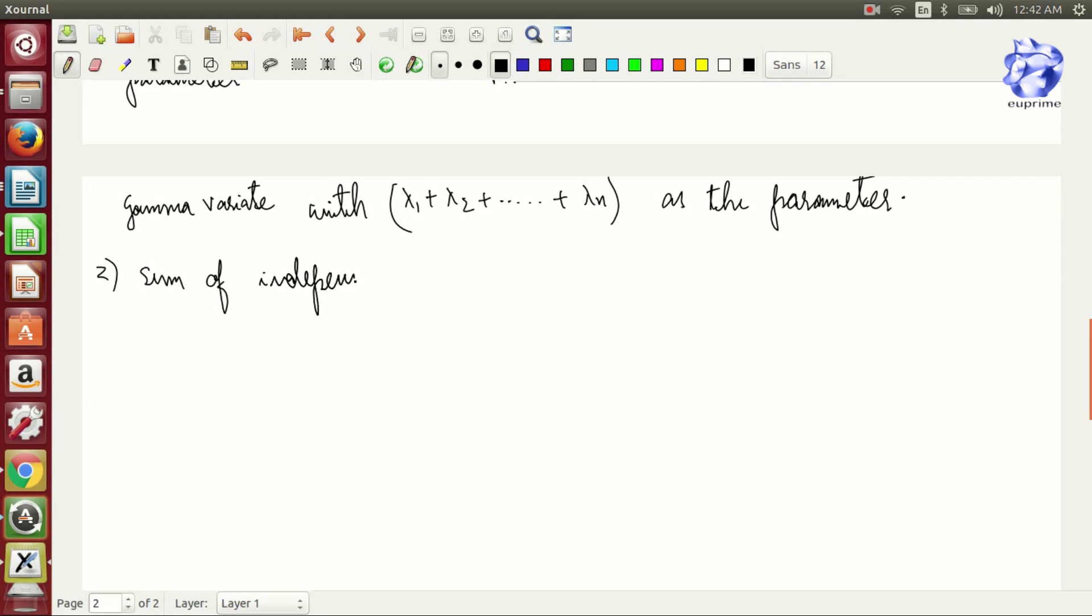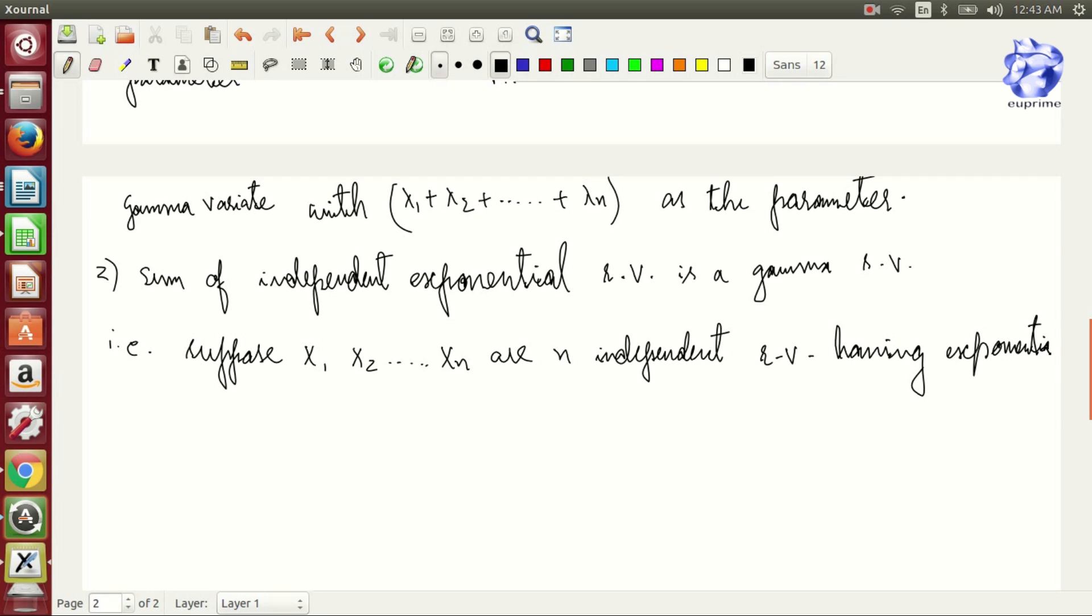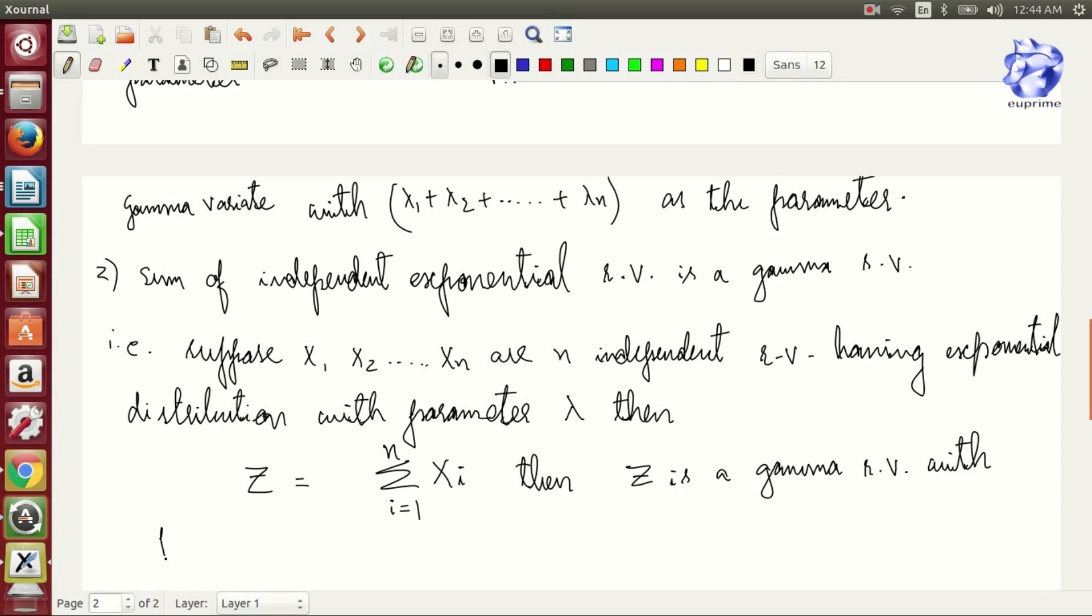Second is sum of independent exponential random variables is a gamma random variable. That is, suppose X₁, X₂, up to X_n are n independent random variables having exponential distribution with parameter λ, then Z equals the summation of X_i where i varies from 1 to n. Then Z is a gamma random variable with parameter n and n over λ.